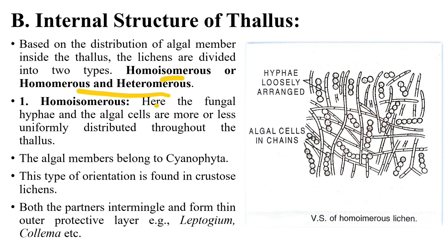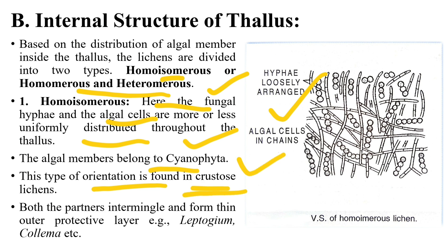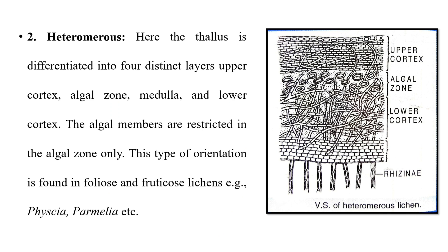Based on the distribution of the algal member inside the thallus, lichens are divided into homoisomerous and heteromerous. In homoisomerous (or homomerous) lichens, the fungal and algal cells are more or less uniformly distributed throughout the thallus. The algal member generally belongs to Cyanophyta (blue-green algae), and this type is found in crustose lichens closely associated with the substratum.